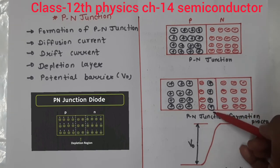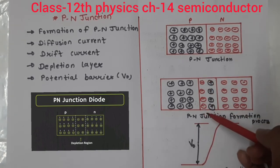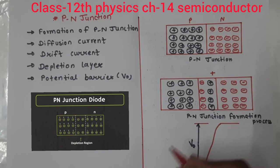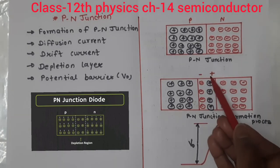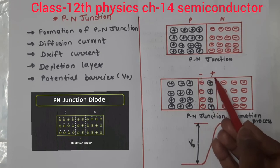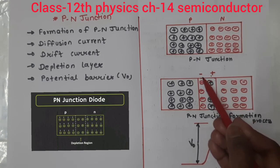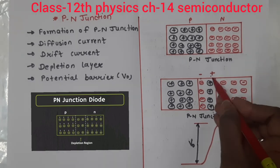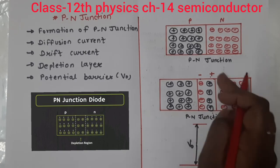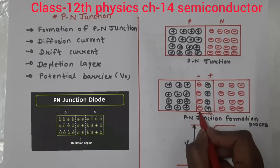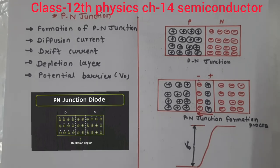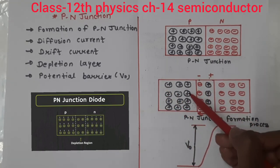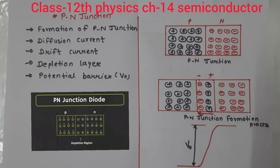Now, on the N-side there are positive charges, which means the donor ions are left behind, and on the P-side there are negative charges from acceptor ions. For these charges, this region will behave positively on the N-side and negatively on the P-side. So this gives us the direction of the electric field, from positive to negative. And the positive side has higher potential while the negative side has lower potential, so there is a potential difference.